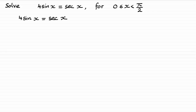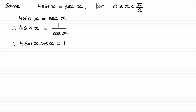I'm going to take that equation and get it into the same trigonometric function. I'm going to change sec x to 1 over cosine x — you should be familiar with that result. Then I'm going to multiply both sides by cosine x, which leads to 4 sine x cosine x equals 1.